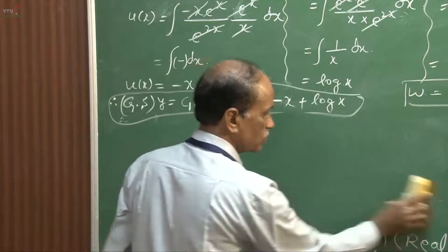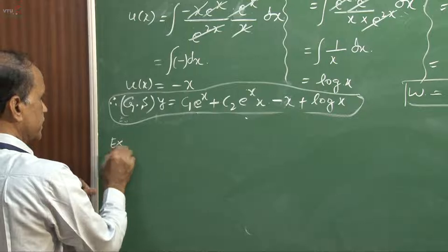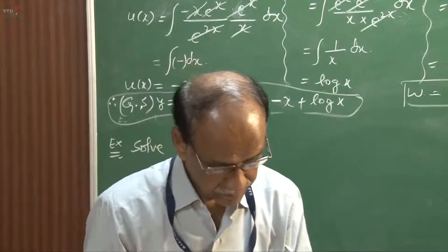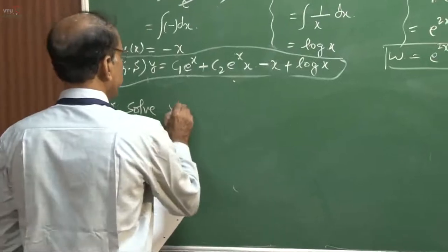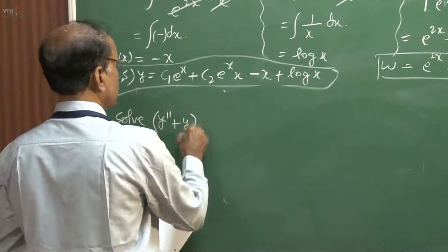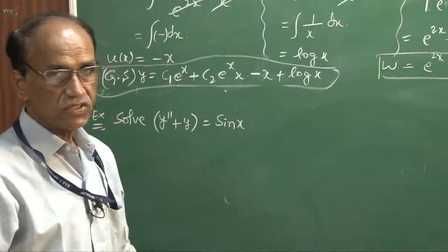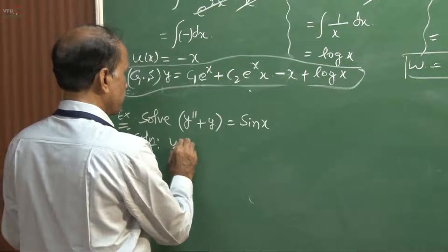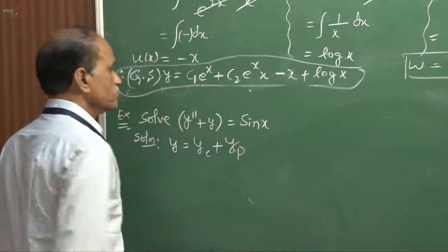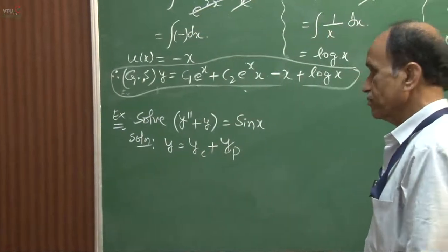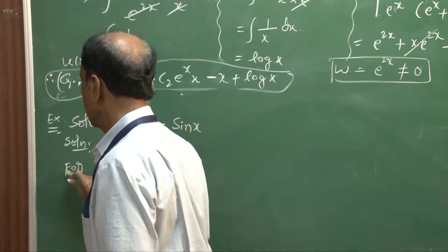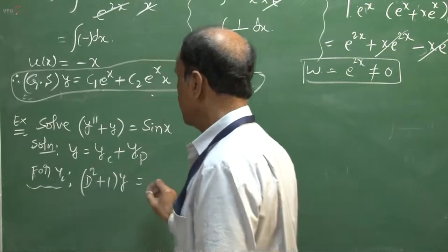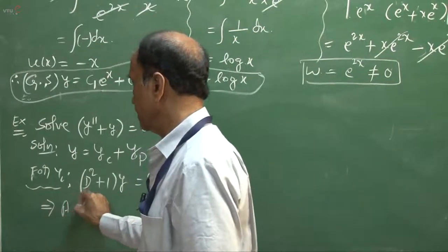Now I will take another variety of problem. Example: solve y double dash plus y equals sin x — involving trigonometric functions like sin x, cos x, secant. The general solution is written as y equals yc plus yp, where yc is the complementary function and yp the particular integral. For yc, we write the operator form as D square plus 1 operating on y equals sin x, which implies the auxiliary equation.